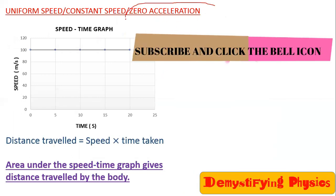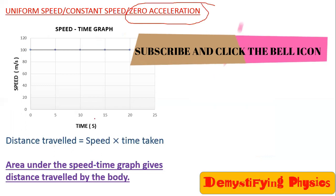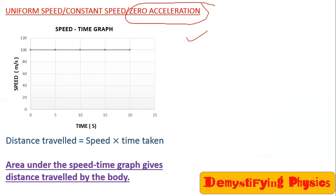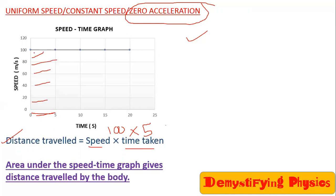Acceleration is zero in this case. Now, how do we find the distance traveled? For example, find the distance traveled in the first 5 seconds. We know distance equals speed multiplied by time. Speed is 100 and time is 5 seconds, so it is 100 into 5 equals 500 meters. Basically, you are finding this area — you are multiplying 5 and 100.